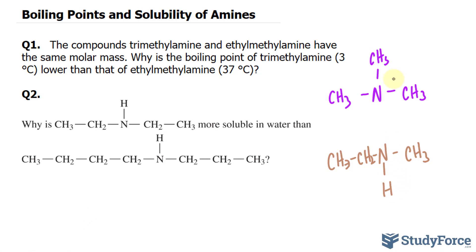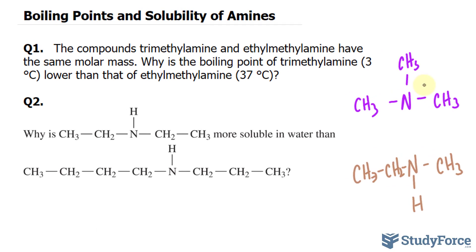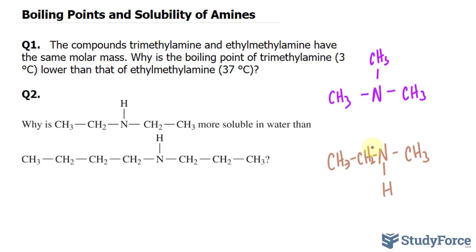This has to do with secondary amines having higher boiling points than tertiary amines. Whenever you have N-H bonds, that's the polar part of the molecule, and we see that with ethylmethylamine — they can actually form hydrogen bonds with each other. It's for this reason that a higher temperature is required to break the hydrogen bonds and form a gas. However, with trimethylamine, it's a tertiary nitrogen, so it cannot hydrogen bond with other trimethylamine molecules. Therefore, it has a boiling point of only three degrees Celsius — not a lot of temperature is needed to form a gas. Very volatile.